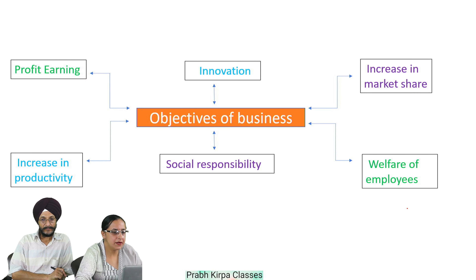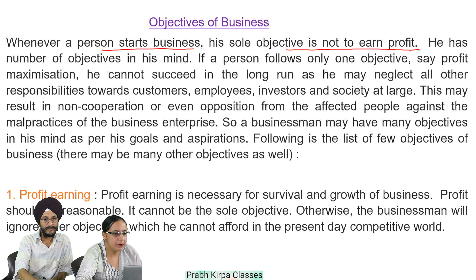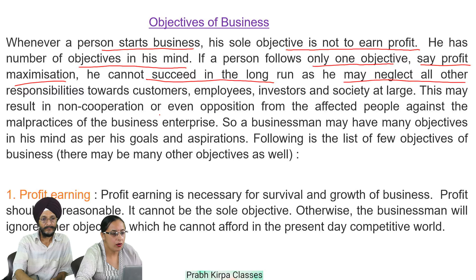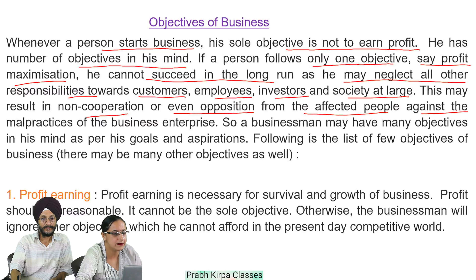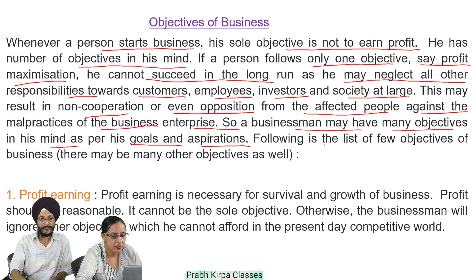This chart shows the objectives of business in pictorial form. We will discuss each objective one by one. Whenever a person starts a business, his sole objective is not to earn profit — he has a number of objectives in mind. If a person follows only profit maximization, he cannot succeed in the long run as he may neglect responsibilities towards customers, employees, investors and society at large. So, a businessman may have many objectives as per his goals and aspirations.